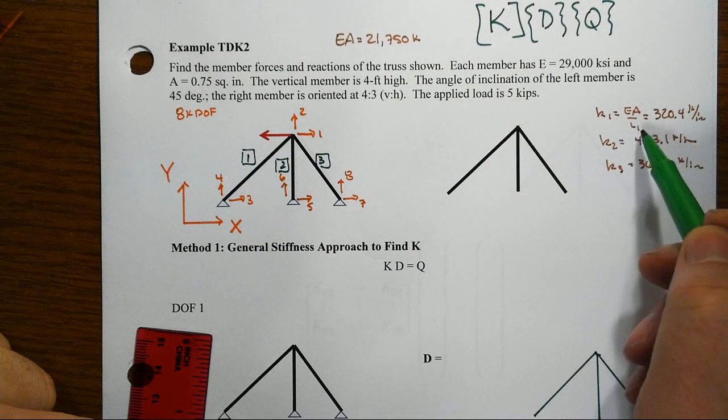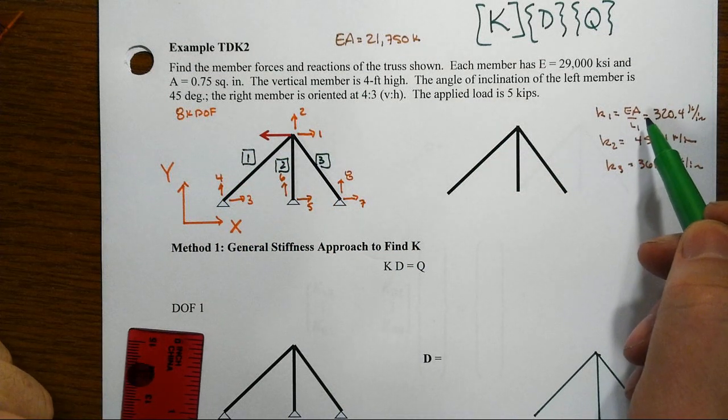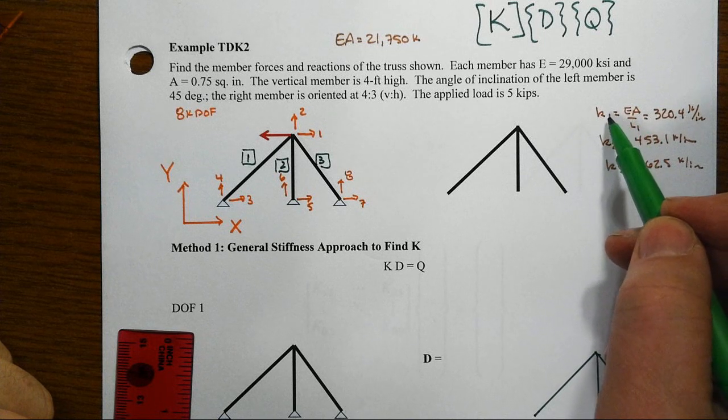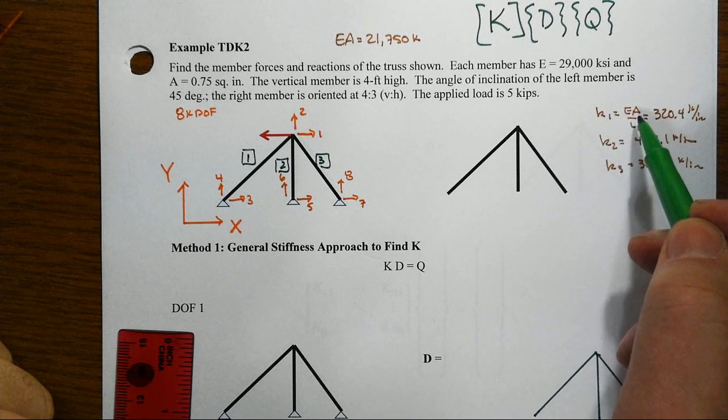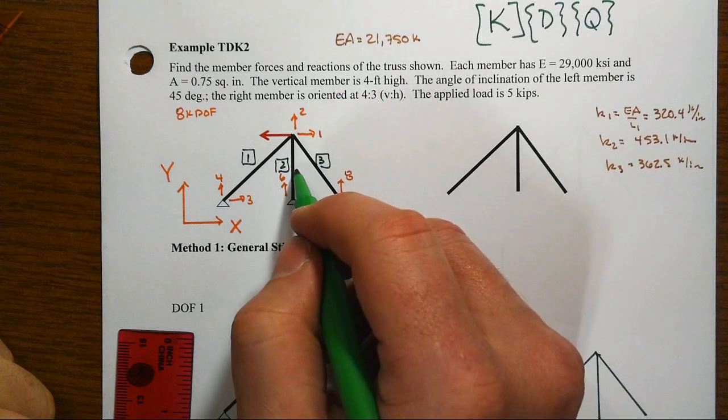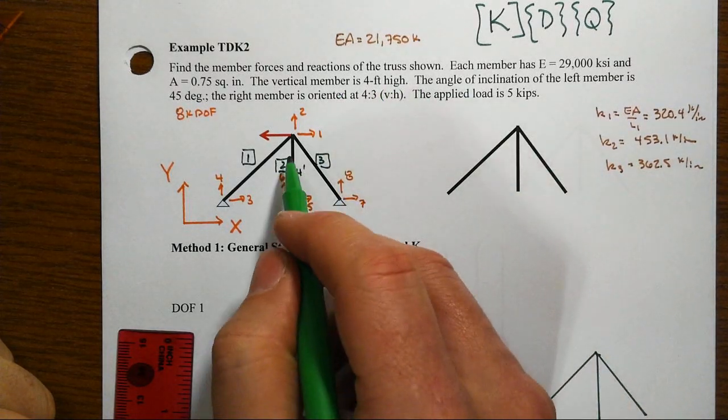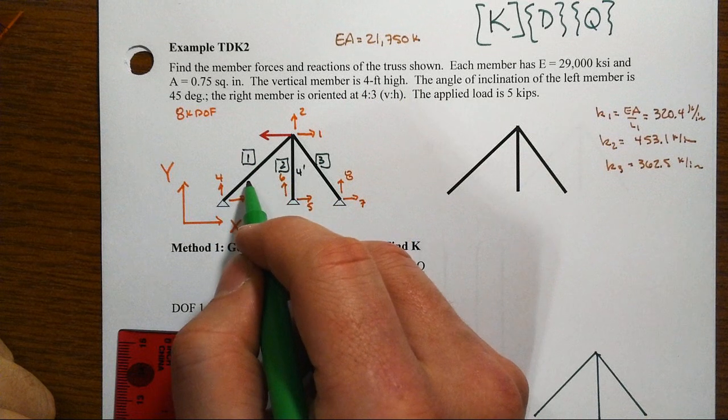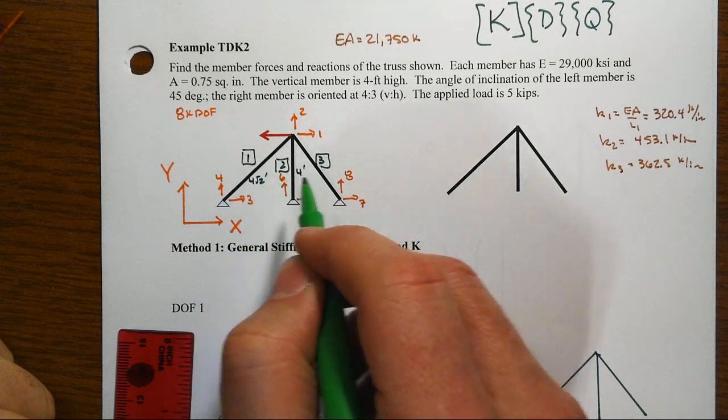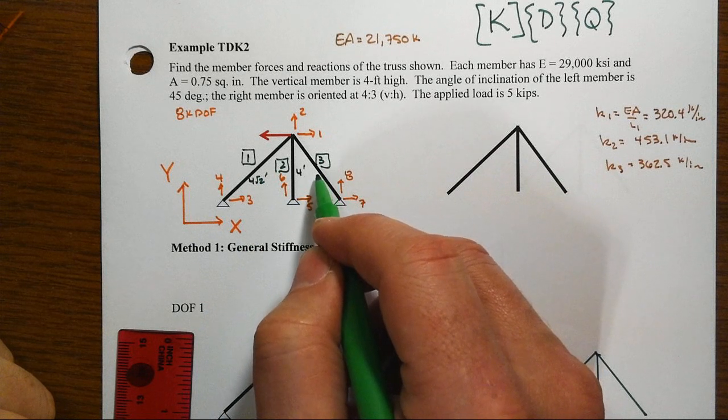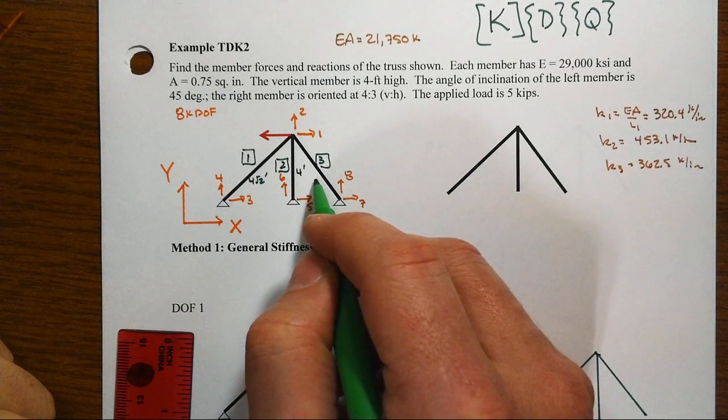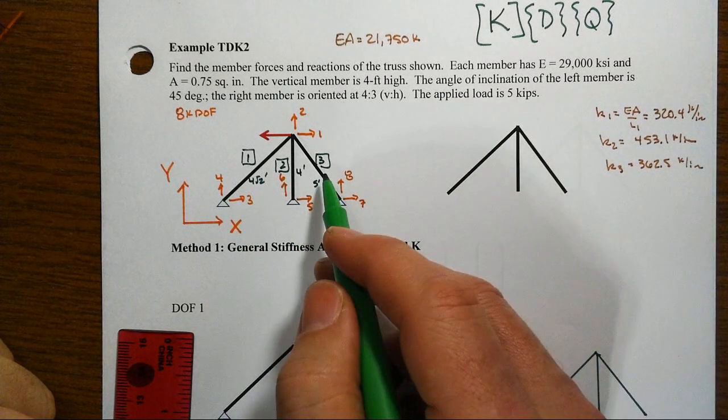The EA over L of each member, the axial stiffness of each member will become prominent. And so note here that K1 will turn out to be E times A over L1. Well, let's look at these heights. We've got a four foot high member in the middle. And with the 45 degree that we have on the left member, that would be four root two. And then the right-hand member is at a 3-4-5 inclination, three in the bottom, four high. So it is five foot long for that one.